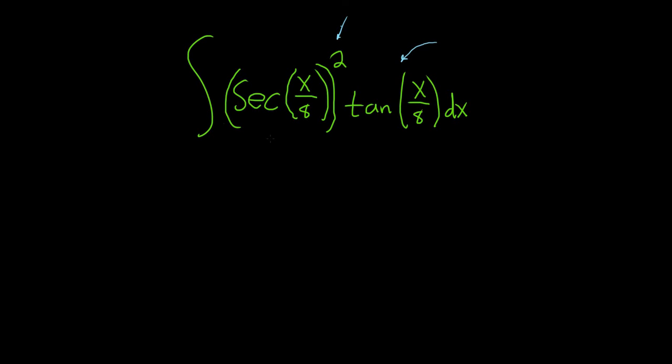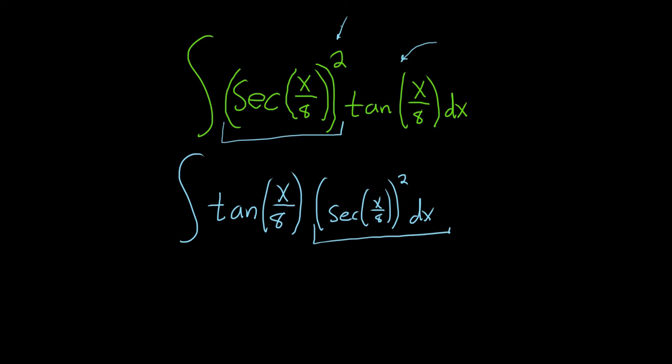Let's go ahead and rewrite this and just choose to save a copy of secant squared. So I'm going to write it like this: tangent of x over 8. And by save a copy of secant squared, we basically mean that we write it over here next to the dx, because it's going to be part of our du.